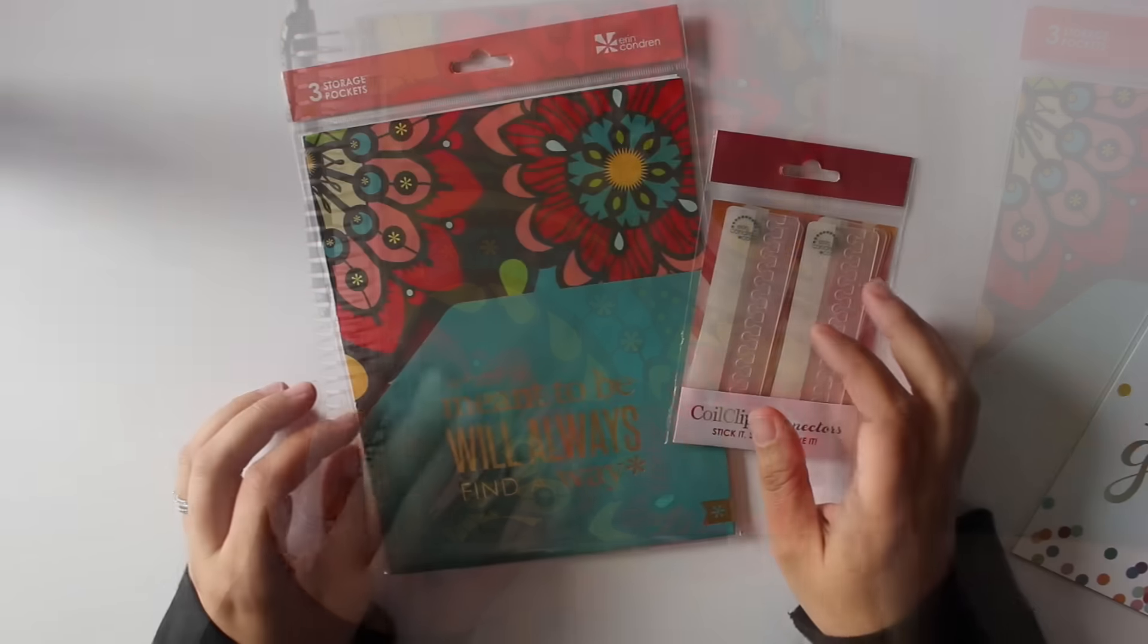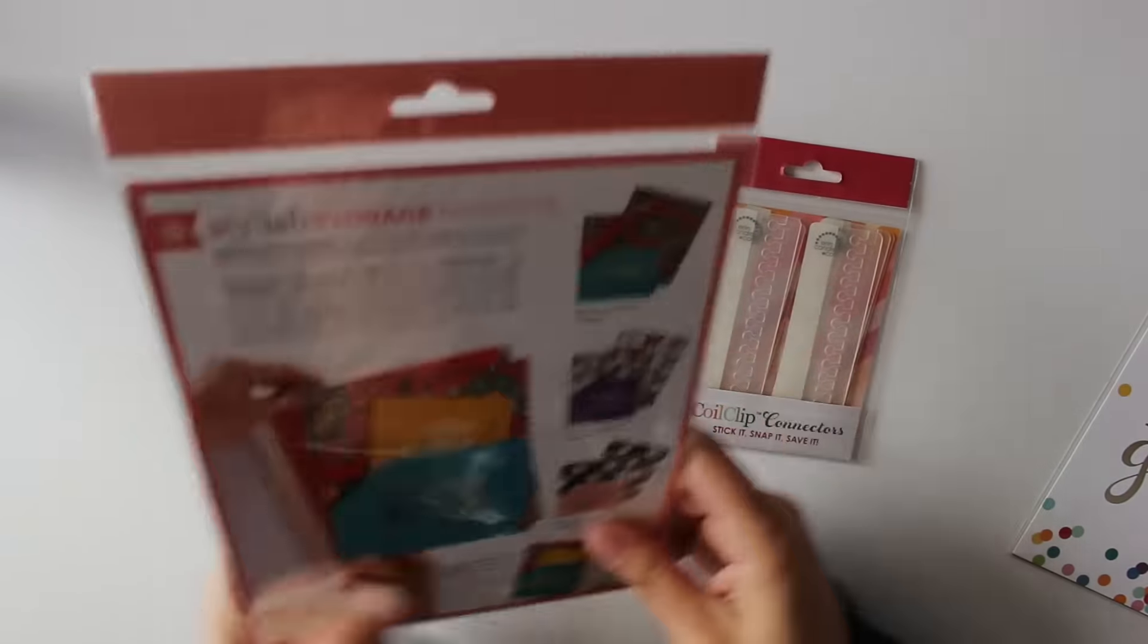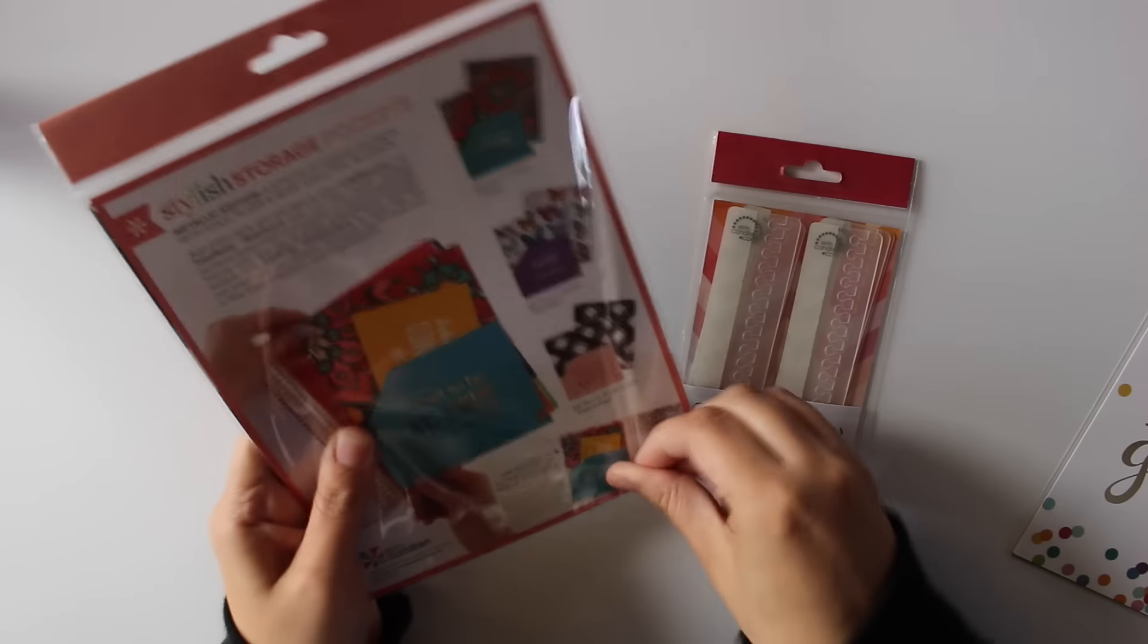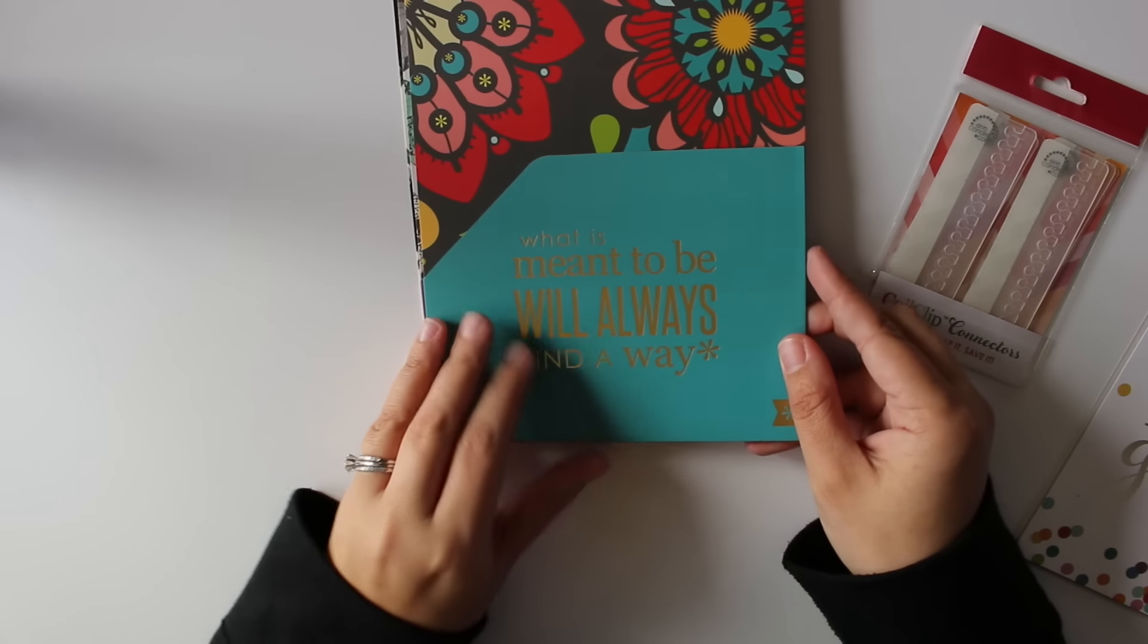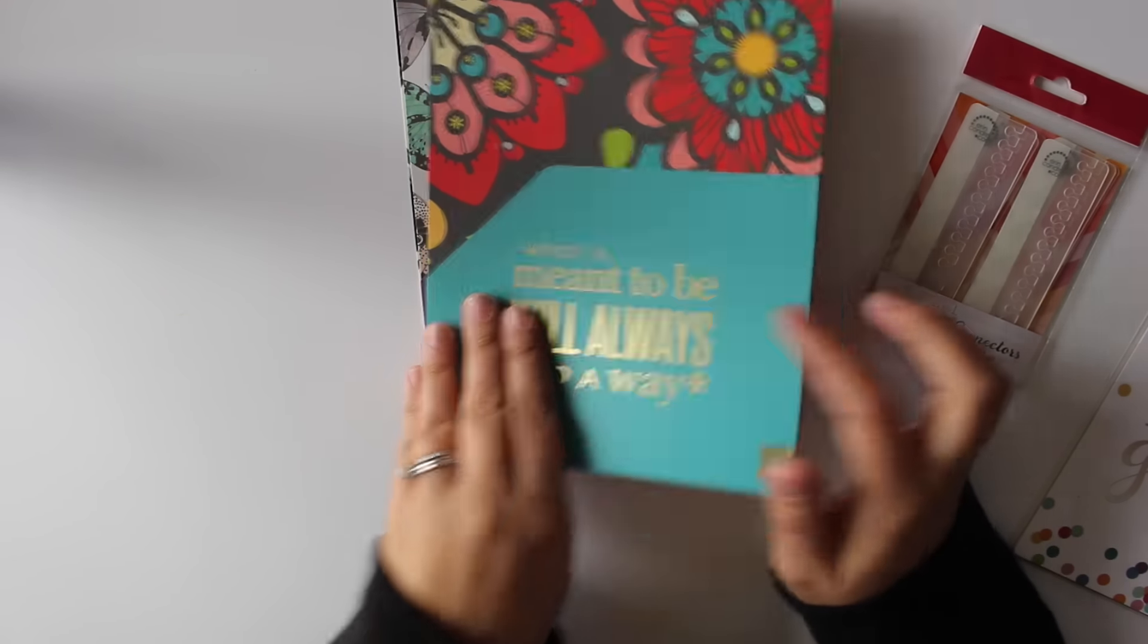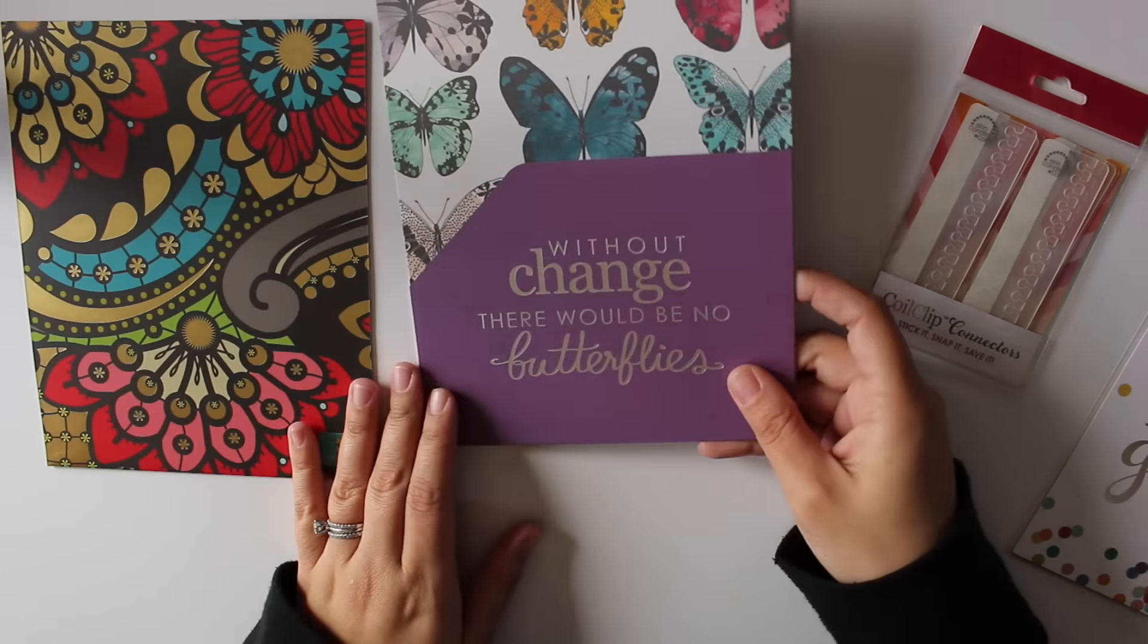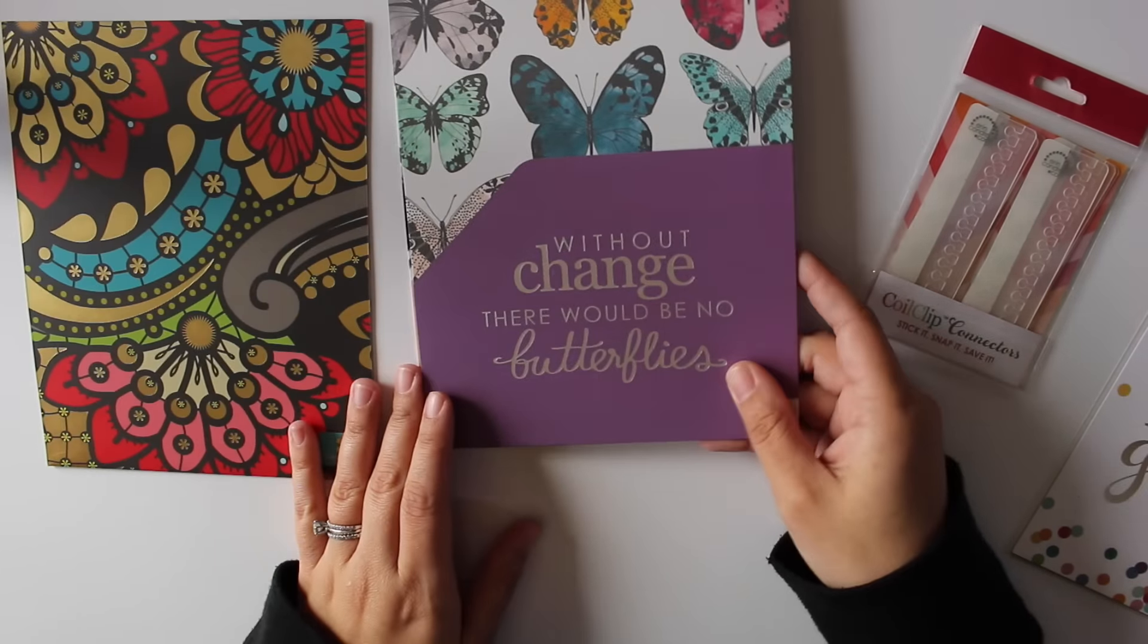Then I got the storage pockets. There's three of them. Let's open them up and see what they look like. I haven't actually opened them yet myself. So there's three of them. It says, 'What is meant to be will always find a way.' And that's the gold foil. The silver foil has the butterfly. 'Without a change, there'd be no butterflies.' That's pretty on the back too. I like that one a lot. And then the rose gold one is 'Dream it, wish it, do it' with a plaid background and rose gold foiling.